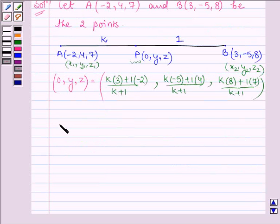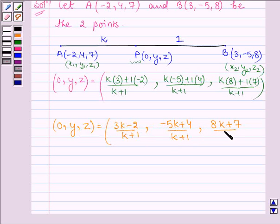which further implies that the coordinates of the point P which is (0, Y, Z) are equal to (3k - 2) upon (k + 1), (-5k + 4) upon (k + 1) and (8k + 7) upon (k + 1).